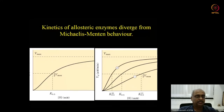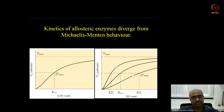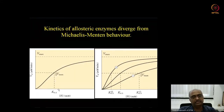As a result you get a sigmoidal-shaped graph when you plot the rate of reaction against substrate concentration. The saturation level is the same, so the half-Vmax still remains the same. Because the behavior diverges from Michaelis-Menten kinetics, we don't call the constant Km; instead it is called K-half.